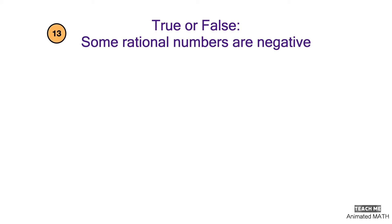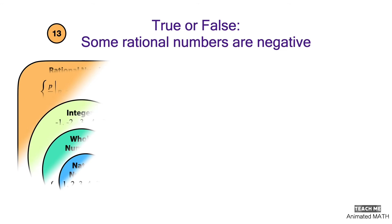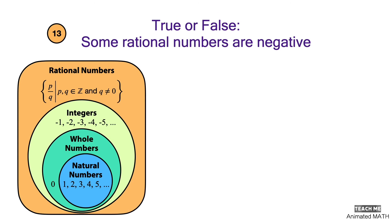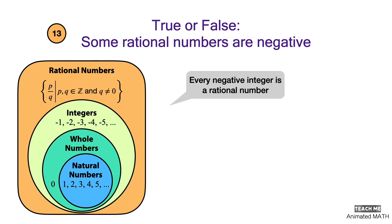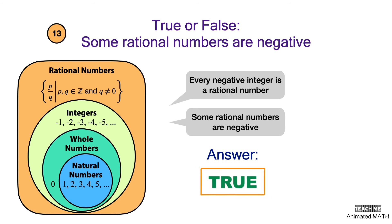True or false: some rational numbers are negative. Every negative integer is a rational number, and other negative rational numbers are those that are the ratio of two integers. So yes, some rational numbers are negative — the answer is true.